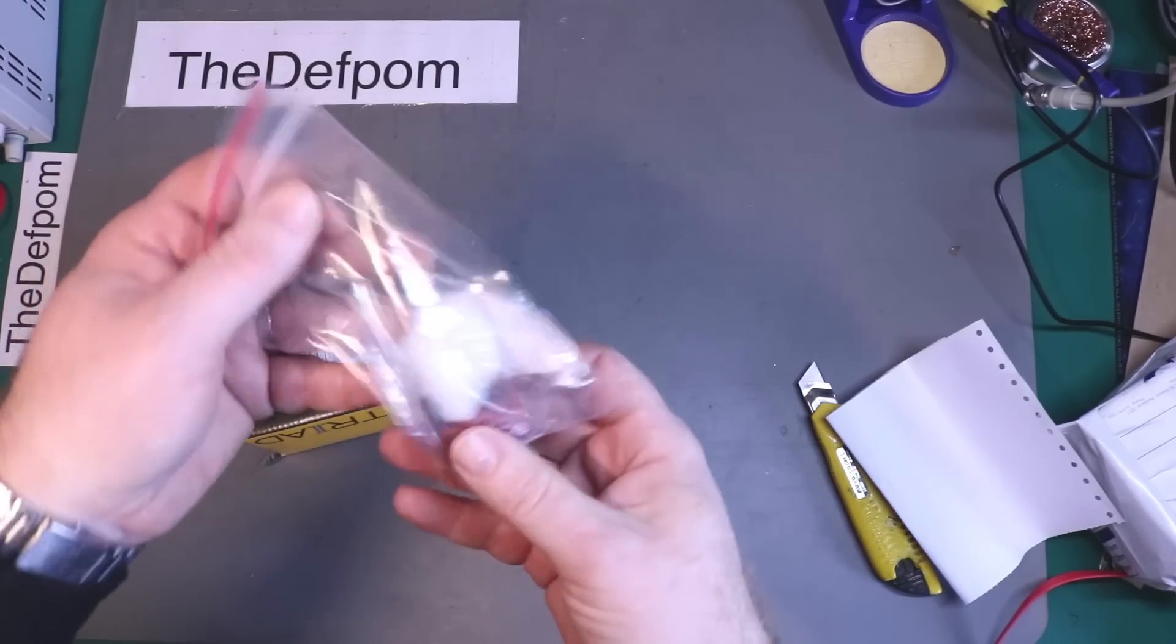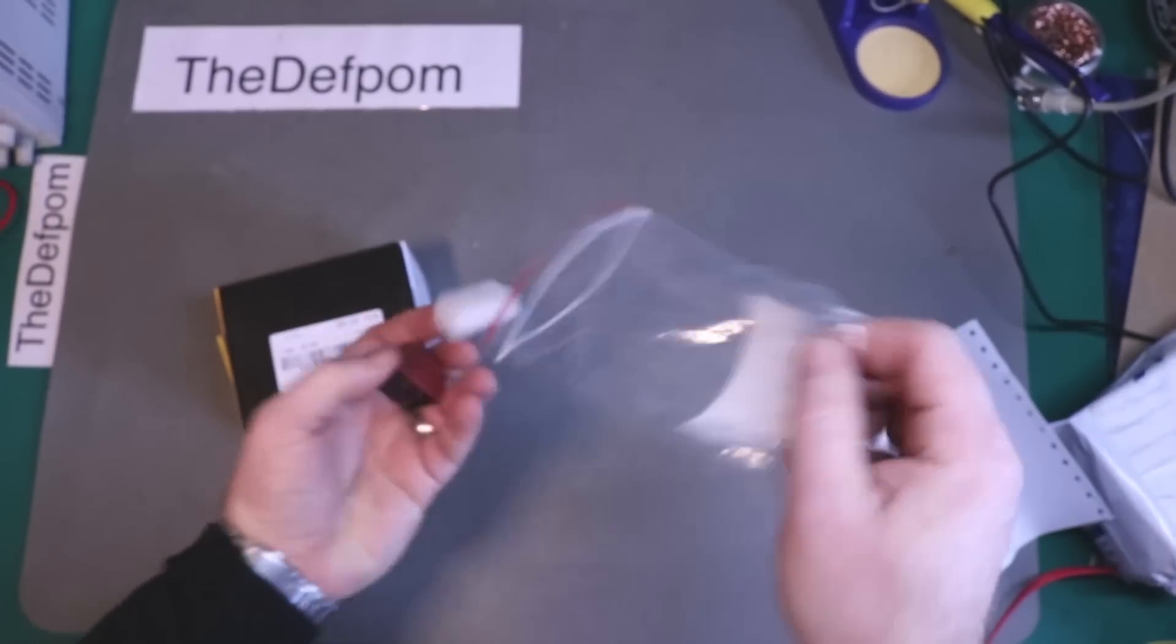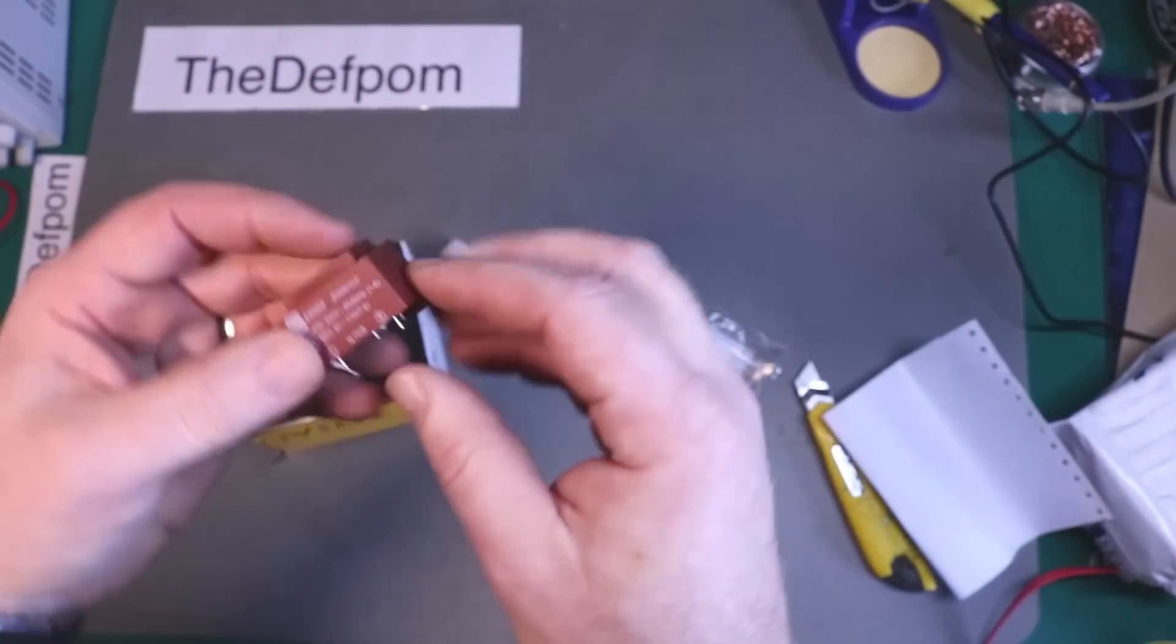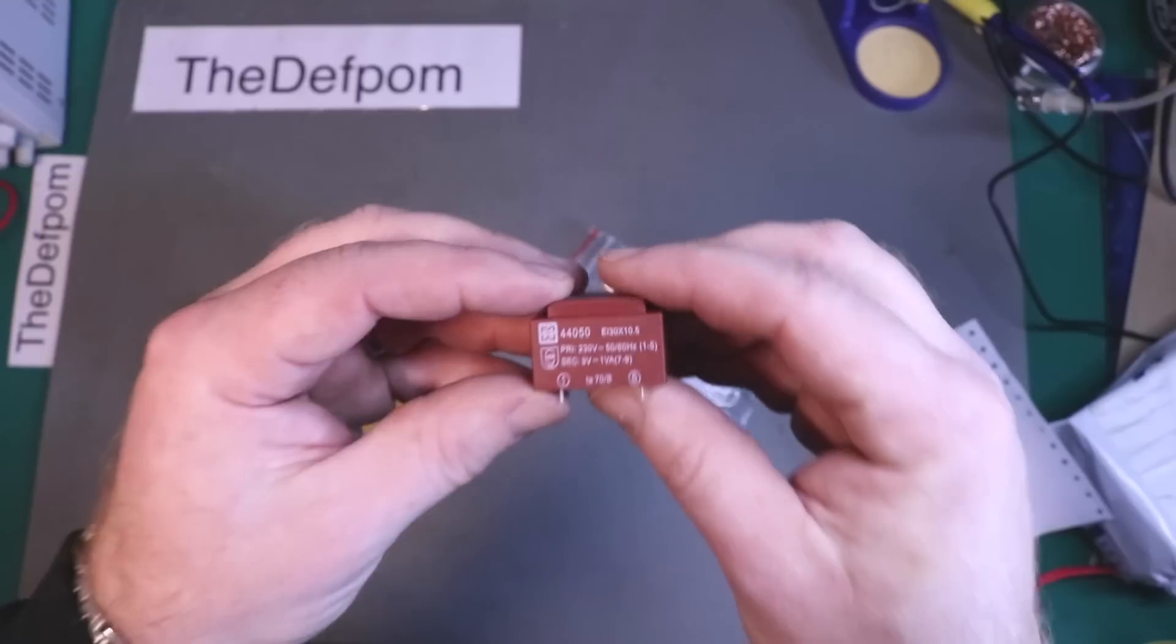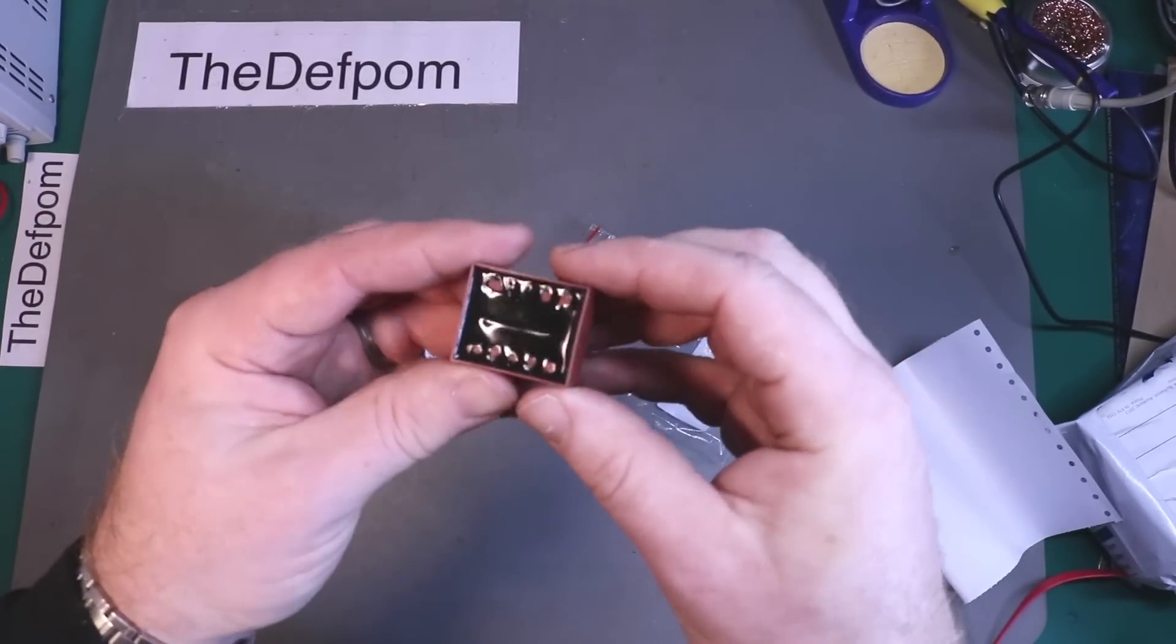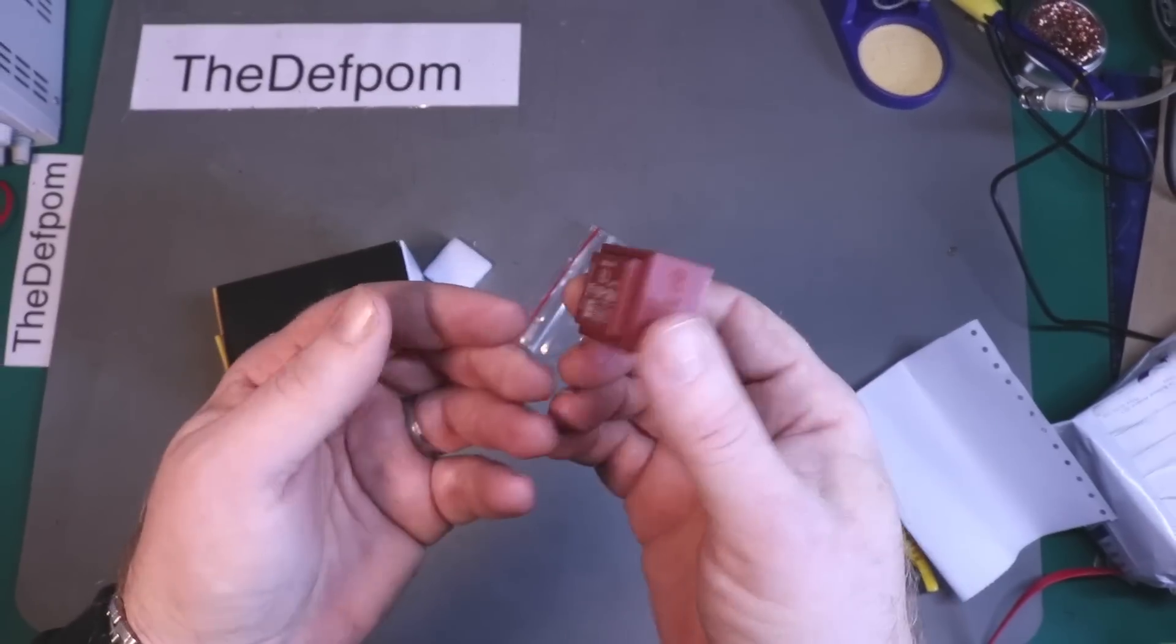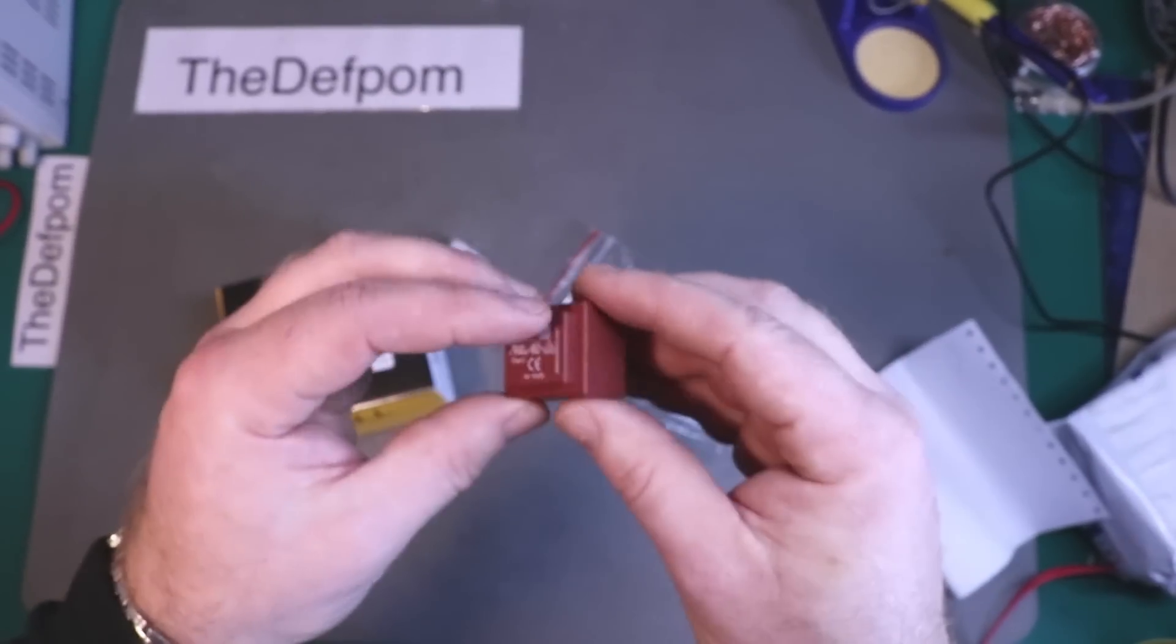So we've got this little transformer here, a little PCB mount one. Let's have a look. So a 230V primary, 9V secondary. I thought that'd be a nice little PCB mount transformer. It's like $4 or something for that one, not very expensive at all.